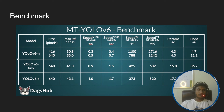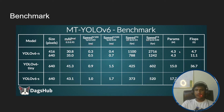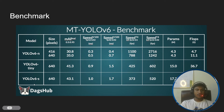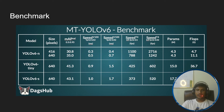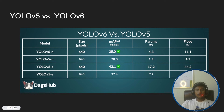Now let's look at the benchmark of YOLOv6 model variants. The first is YOLOv6-N (nano), showing model size in pixels, mean average precision, speed, parameters, and FLOPs. Then there is the YOLOv6-Tiny model with its parameters, followed by the YOLOv6-S (small) model with its parameters and FLOPs.